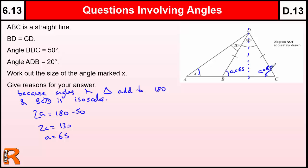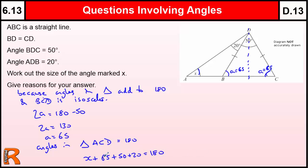Now we've got two options. We can use this angle here — 65 — and these two form a triangle, which is probably the easiest. Or we could use a straight line and then use the other triangle. I'm going to use the big triangle. So angles in triangle ACD equals 180. We've got X plus 65 plus 20 plus 50 equals 180. So those three angles add up to 135. So X plus 135 equals 180, which tells us X equals 180 minus 135, which is 45 degrees. So X is 45 degrees. We've given our reasons as we've gone along, just stating the rules we used to get to the answer.